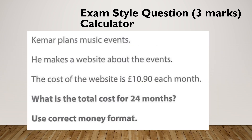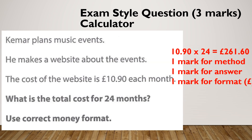Let's do another one. Kumar plans a music event. He makes a website about the event and the cost of the website is £10.90 each month. What's the total cost for 24 months? Pause and give it a go. Hopefully you got £261.60. Because this was for each month and I wanted 24 months, it was a multiply. A mark for your multiply, a mark for your answer, and a mark for your pound sign and your zero.